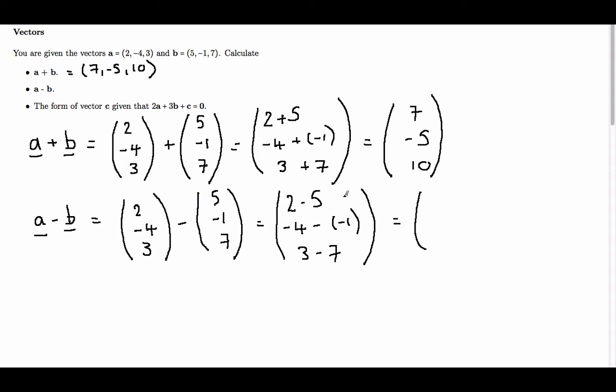Now 2 minus 5 is minus 3. Minus 4 minus minus 1 gives a plus 1, so we have minus 4 plus 1, which is minus 3. And we have 3 minus 7, which is minus 4. So we say that a minus b is minus 3, minus 3, minus 4.